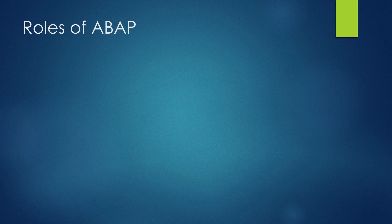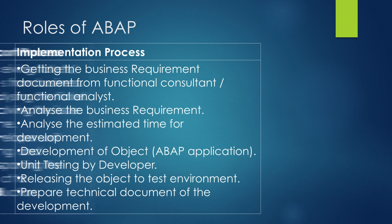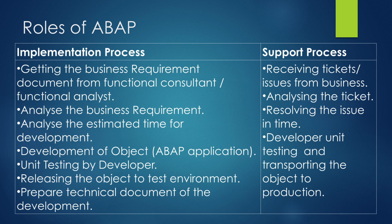ABAP supports two processes: the implementation process and the support process. In the implementation process, ABAP helps by getting the business requirement document from a functional consultant, analyzing the business requirement, estimating time for development, developing ABAP applications, unit testing, releasing the object to the test environment, and preparing a technical document. In the support process, activities include receiving tickets from the business, analyzing the ticket, resolving the issue in time, developer unit testing, and transporting the object to production.